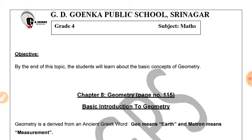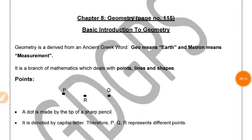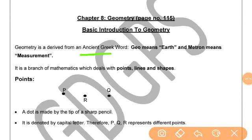The objective of this topic is to make you learn the basic concepts of geometry. Geometry is derived from an ancient Greek word geo, which means earth, and metron, which means measurement. That is, geometry means measuring earth. It is a branch of mathematics that deals with points, lines, and shapes.